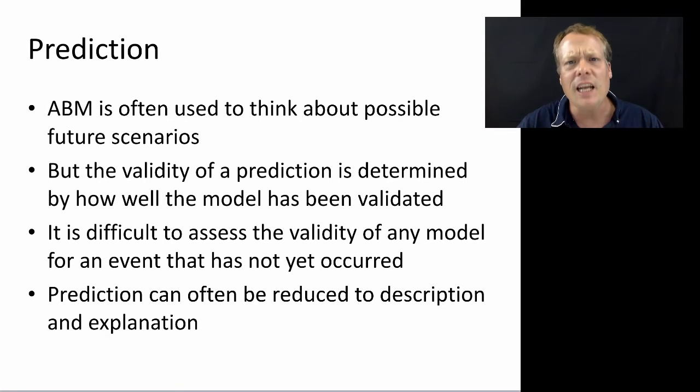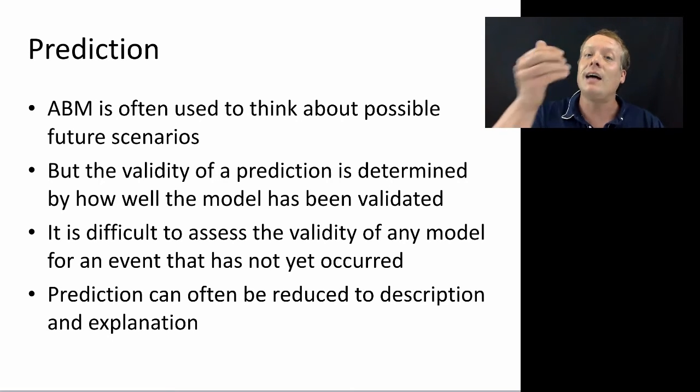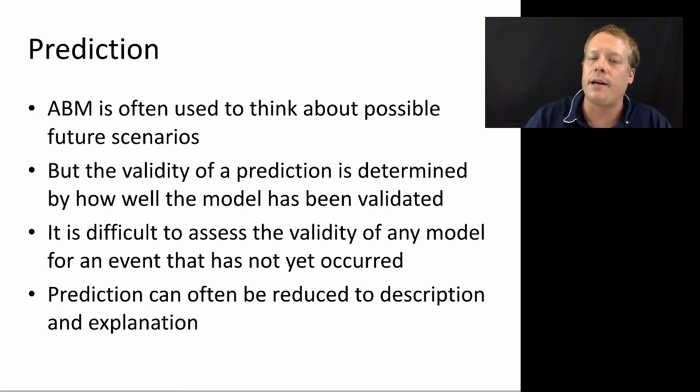But the validity of a prediction is determined by how well that model has been validated in the context of the thing that you are trying to predict. So, for instance, something like Newton's law is a very valid model for prediction because people have explored it in almost every context that it's possible to explore it in.